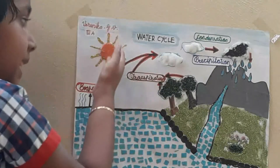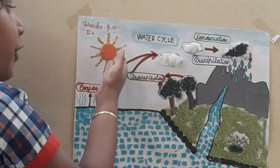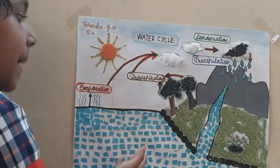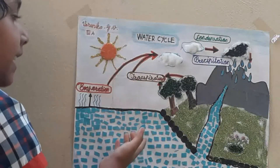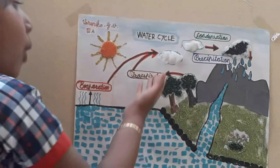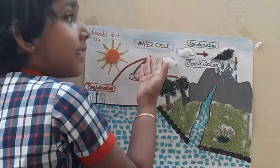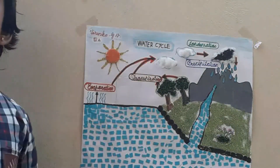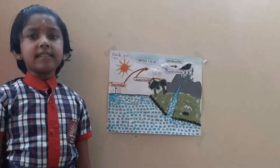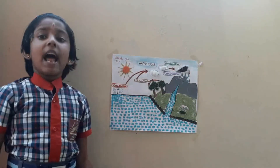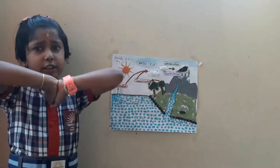Evaporation. Evaporation of water from rivers, streams, ice, soil, lakes, and the ocean. Water vapour rises and mixes up with air. Evaporation is an important part of the water cycle and occurs continuously throughout nature.